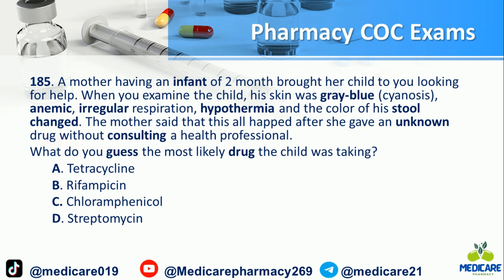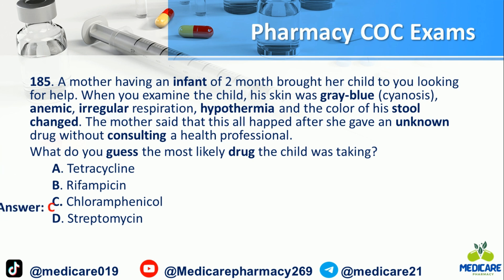Number 185: A mother brought her child to you looking for help. When you examined the child, his skin was gray-blue (cyanosis), anemic, with irregular respiration, hypothermia, and changed stool color. The mother said this all happened after she gave an unknown drug without consulting a health professional. What is the most likely drug the child was taking? A) Co-trimoxazole. B) Rifampicin. C) Chloramphenicol. D) Streptomycin. The answer is C.